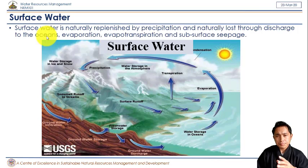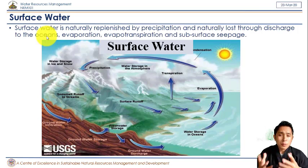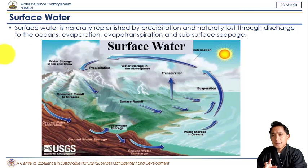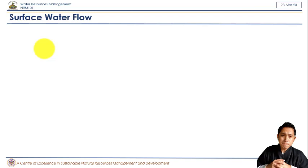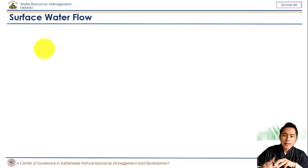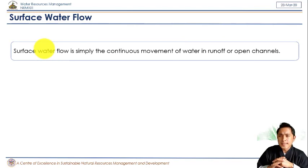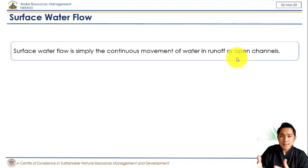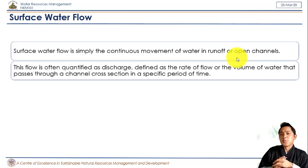Basically two things: surface water is lost through factors like going to ocean, evaporation, evapotranspiration, and percolation or infiltration into the soil surface. The natural replenishment of surface water is mainly through precipitation. Surface water is the water remaining on the surface.